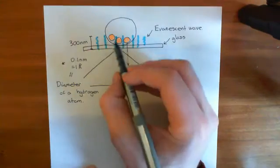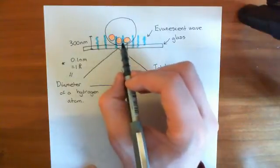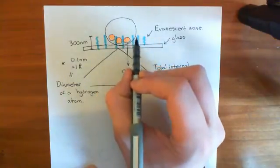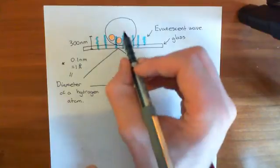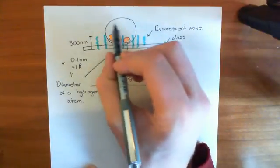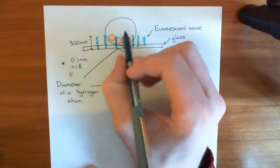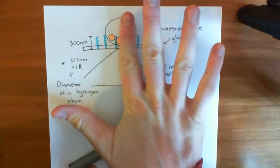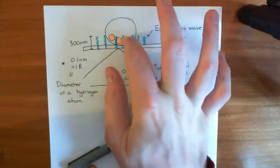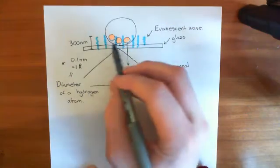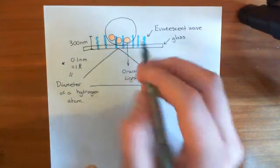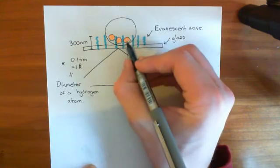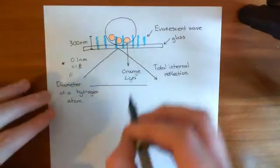That's the beauty of this — you're only going to get light emitted from a tiny thin layer, so you actually get a decent picture. Whereas if you were getting light emitted from every single layer of the cell it would be a total mess, because you wouldn't know where the light had come from. With TIRF microscopy you're imaging a very thin layer, so you can practically say it's within 300 nanometres.